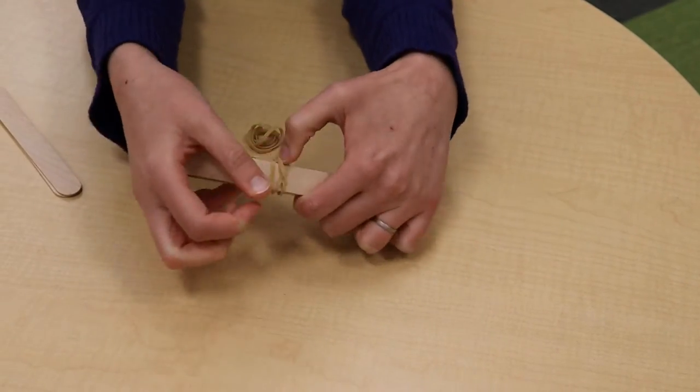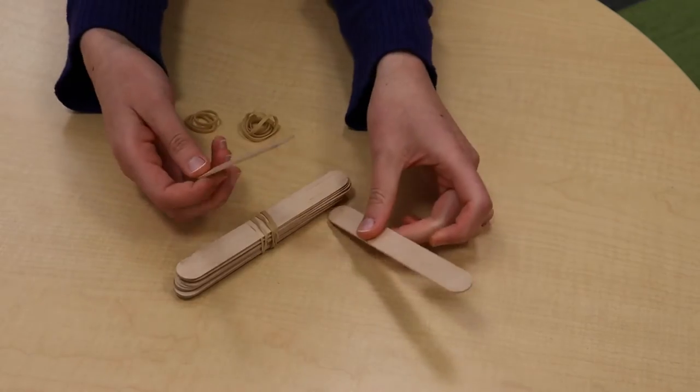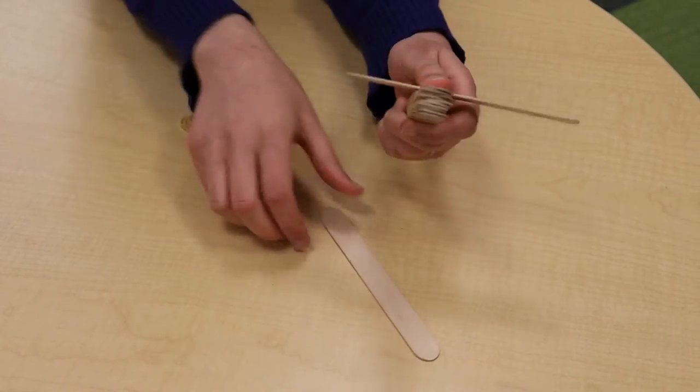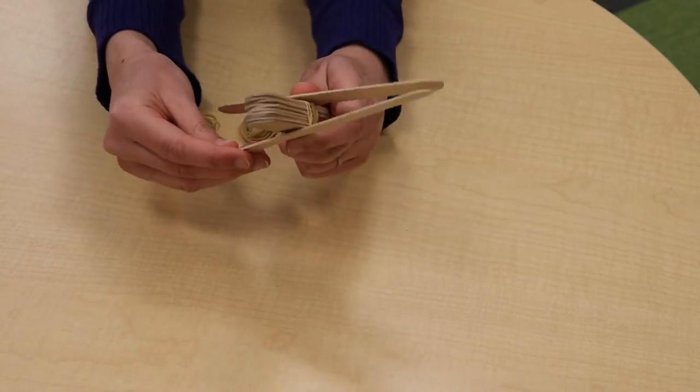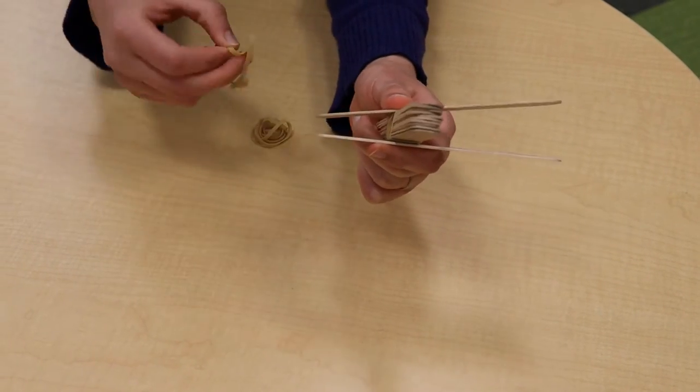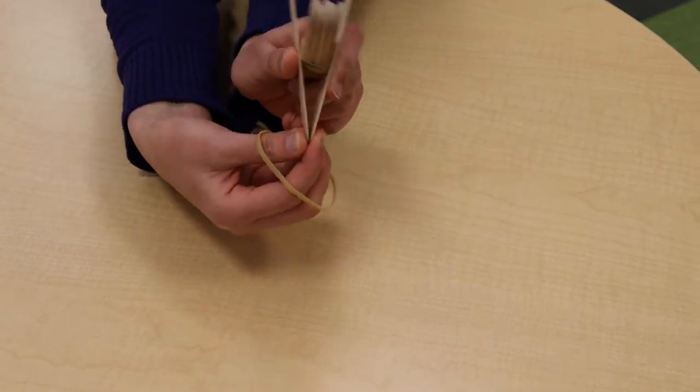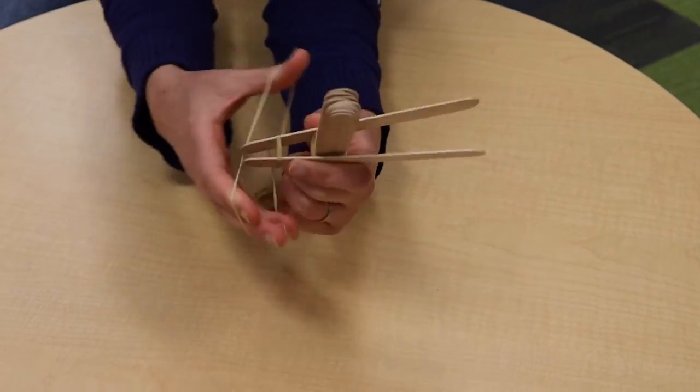And then we are going to take two more popsicle sticks. I've got two here, and we're going to put one on top of our big stack and one on the bottom, and then we are going to use another rubber band to fasten the base here to make that V shape. So let me tie that off.